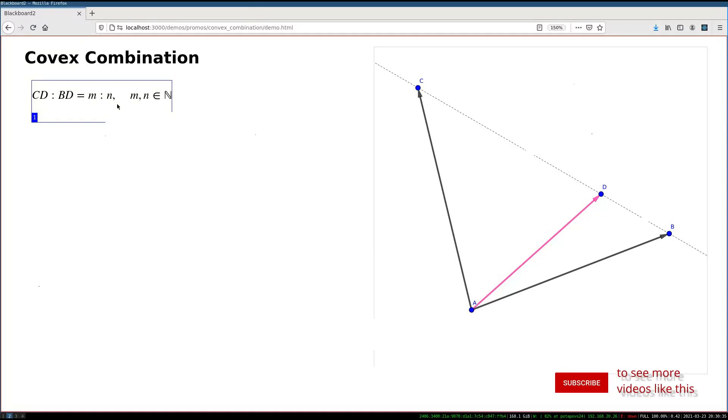So, effectively, the solution is based on vectors. And you do it like this. Just for the sake of brevity, I will introduce two little symbols, little a and little b, to represent my vectors AC and AB.